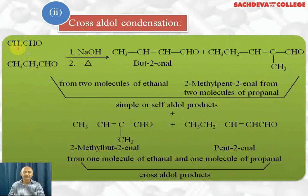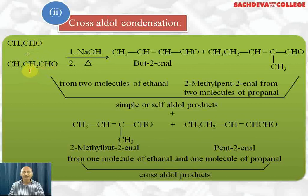Now let's take up cross aldol condensation. In cross aldol condensation, both aldehydes are not the same. Here we react acetaldehyde and propanal with NaOH. Acetaldehyde leads to the formation of 3-hydroxybutanal. Remember, alpha hydrogen is removed to generate a carbanion that attacks the carbonyl of propanal. You will get four products — one product formed from two moles of acetaldehyde, whose aldol undergoes dehydration to give but-2-en-1-al.